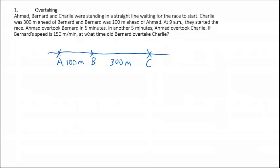At 9am, they started the race. All three racers started at the same time. Ahmad overtook Bernard in 5 minutes, and then in another 5 minutes, Ahmad overtook Charlie. So Ahmad overtook Bernard first in 5 minutes, then overtook Charlie after another 5 minutes. From this, you can tell that Ahmad's speed is the fastest, because he was able to overtake both Bernard and Charlie.